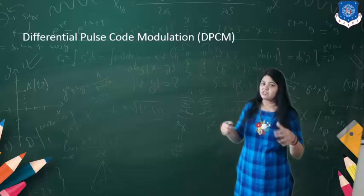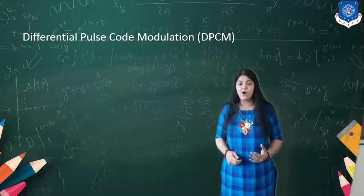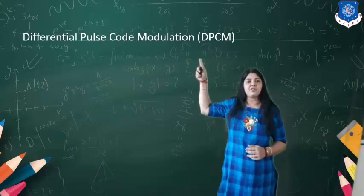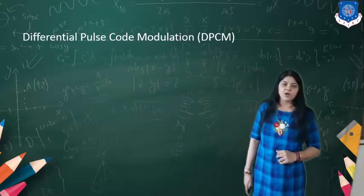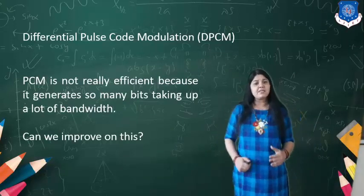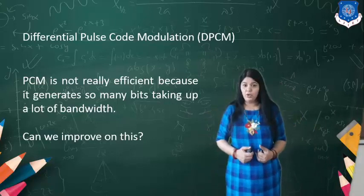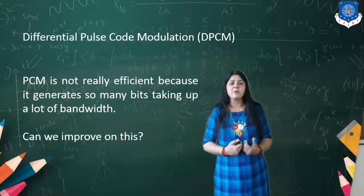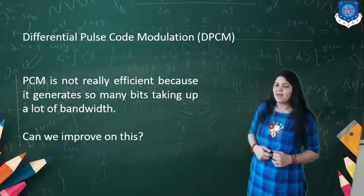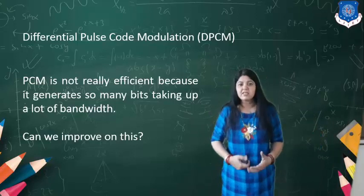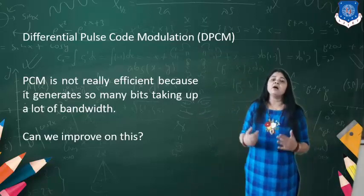So that covers companding used in communication. The next topic is differential pulse code modulation, DPCM, which is one step ahead. The problem with PCM is that it is not very efficient because so many bits take up a lot of bandwidth. We have very limited bandwidth and many tasks to perform, so we should use a technique that requires less bandwidth.